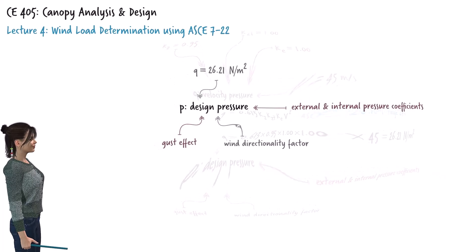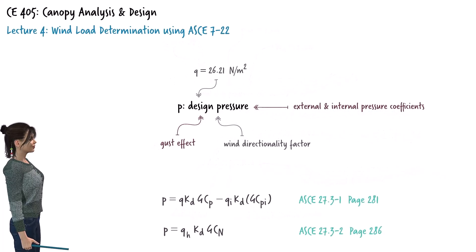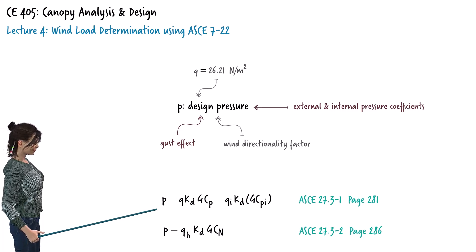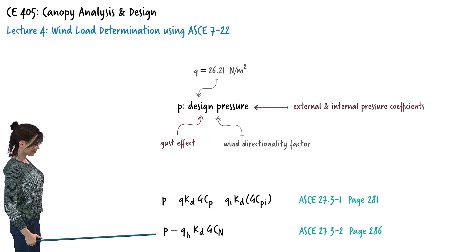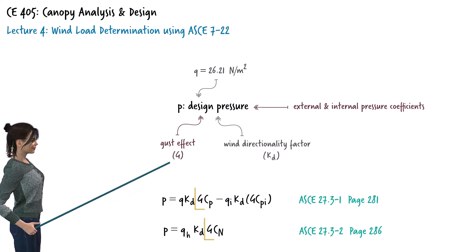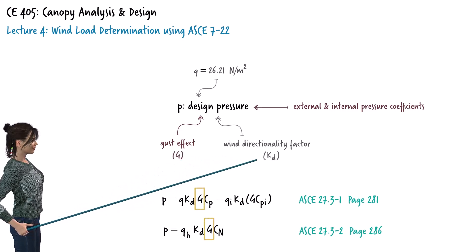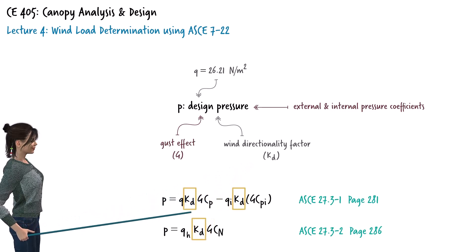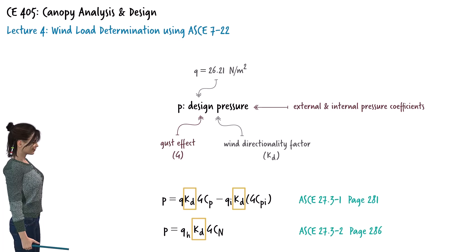ASCE provides two distinct equations for calculating design pressure: Equation 27.3-1 and Equation 27.3-2. Before explaining the difference between these two equations, let's talk about the terms they have in common: G, the gust effect factor, and KD, the wind directionality factor. The other terms — the external and internal pressure coefficients — are related to the structure's form and enclosure condition. We'll come back to those shortly.